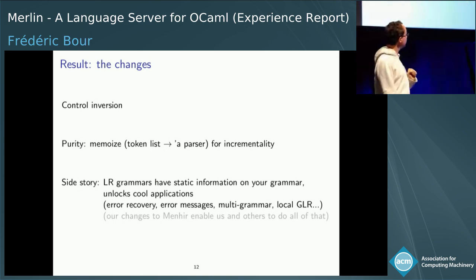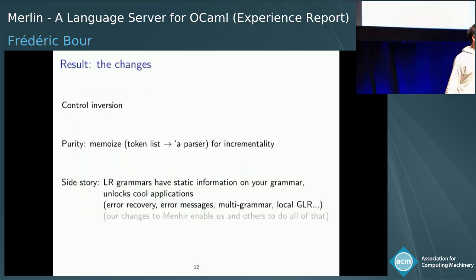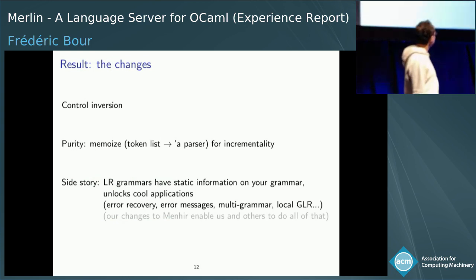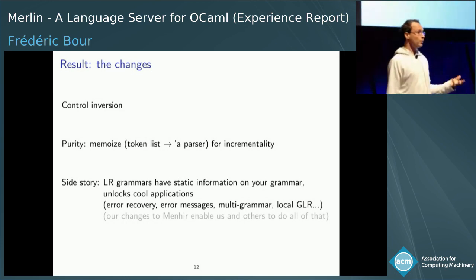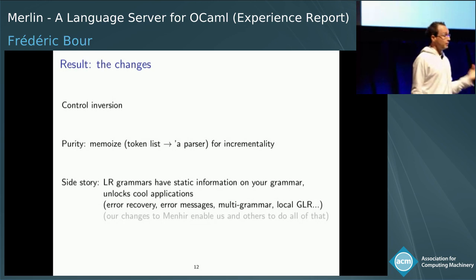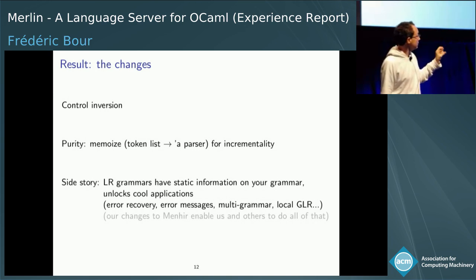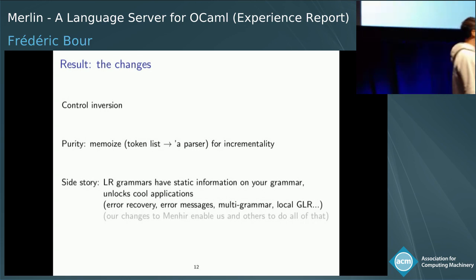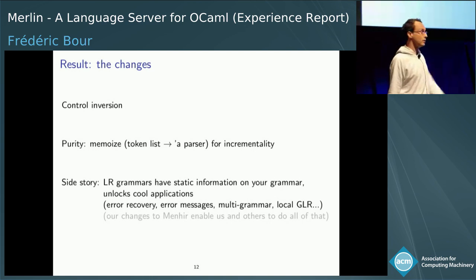We inverted the control. This gives a cheap way to do incrementality because parsers are pure — we can reuse the shared prefix that didn't change between two analyses. More importantly, we have reified the state of the parser. Because LR grammars — the formalism used by Yacc and Menhir — are static, we can do a lot of analysis before execution. This unlocks applications like error recovery, improved error messages, changing the grammar based on local information, or even emulating GLR locally for interesting cases. These changes have been upstreamed into Menhir and others have already started using them.